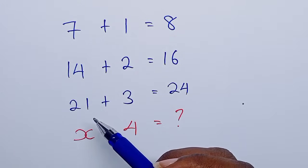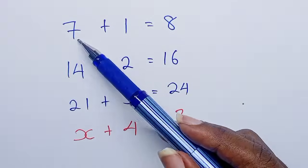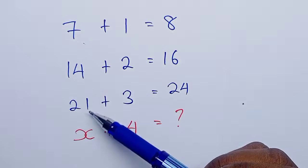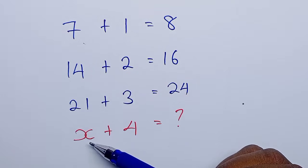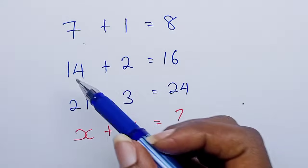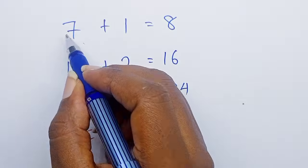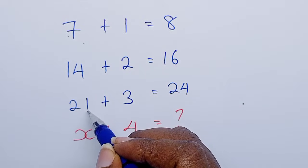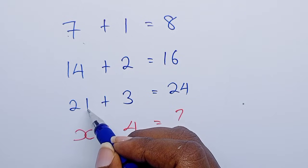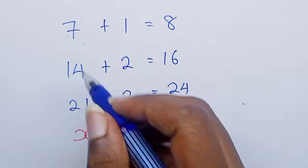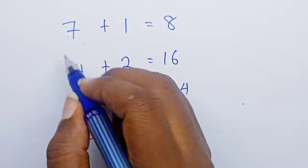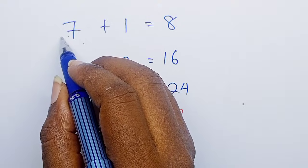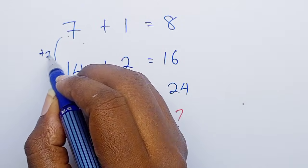Here, we can notice a pattern in the figures on the left. We can see this is 7, this is 14, this is 21. They all have a relationship — they are in groups of 7. So from 7 to 14, you add 7.